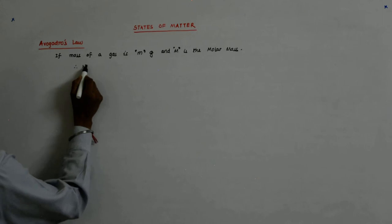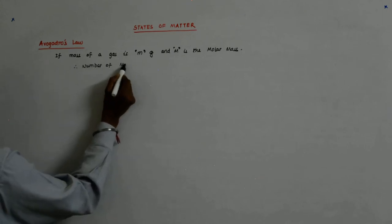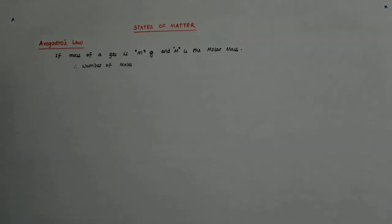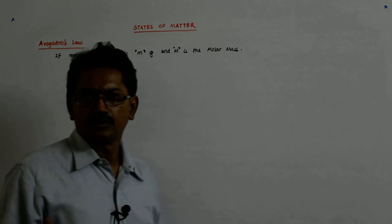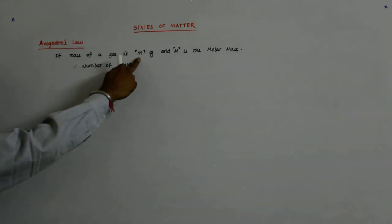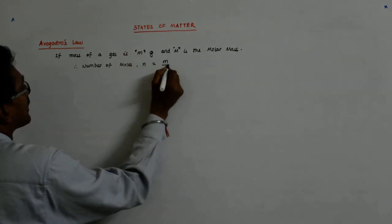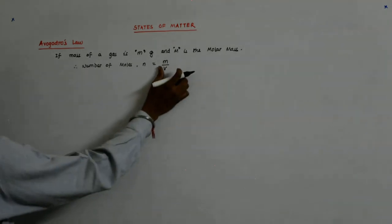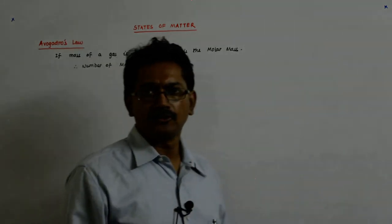Therefore, correct, number of moles, molar mass is gram molecular mass, right? So you should understand you cannot use this in kg. So number of moles n is equal to m upon M, this you already know, correct.